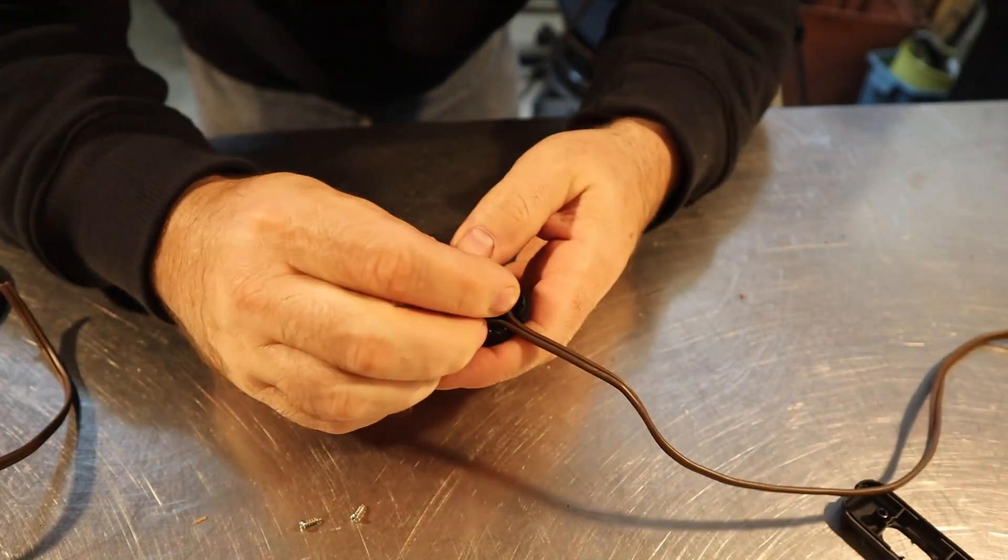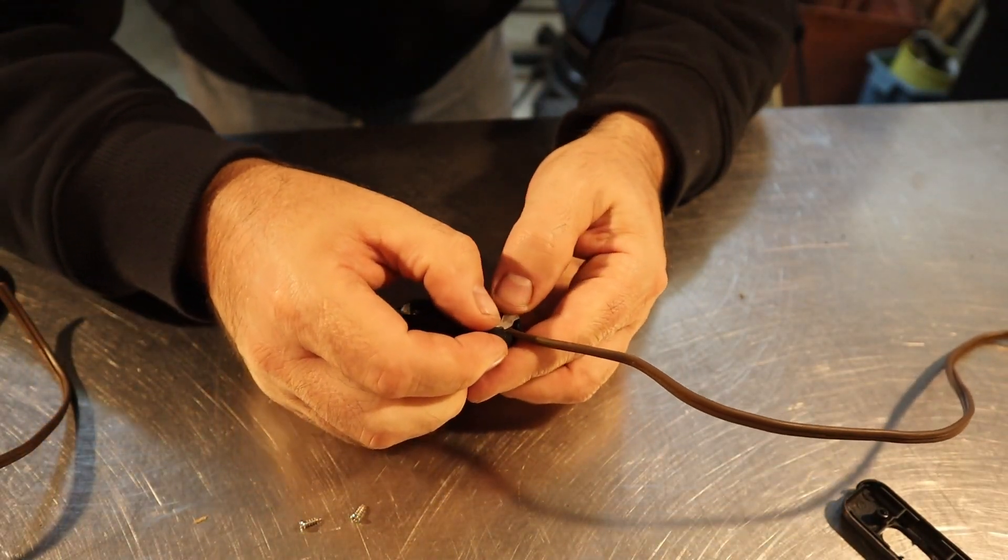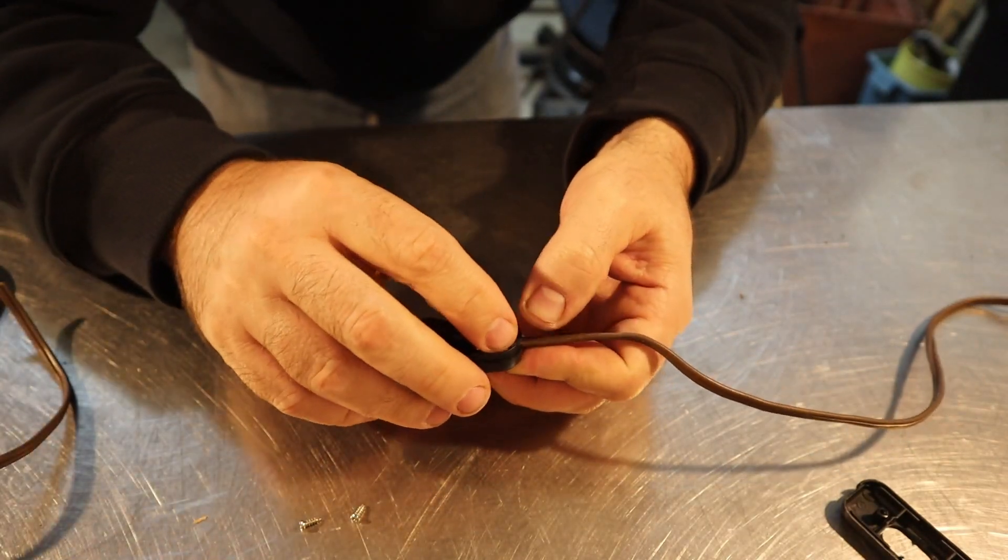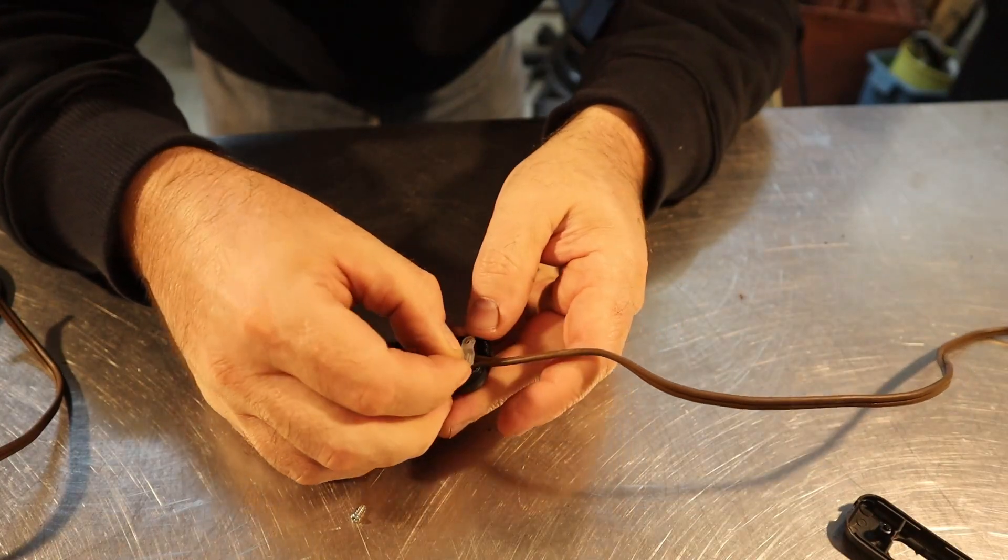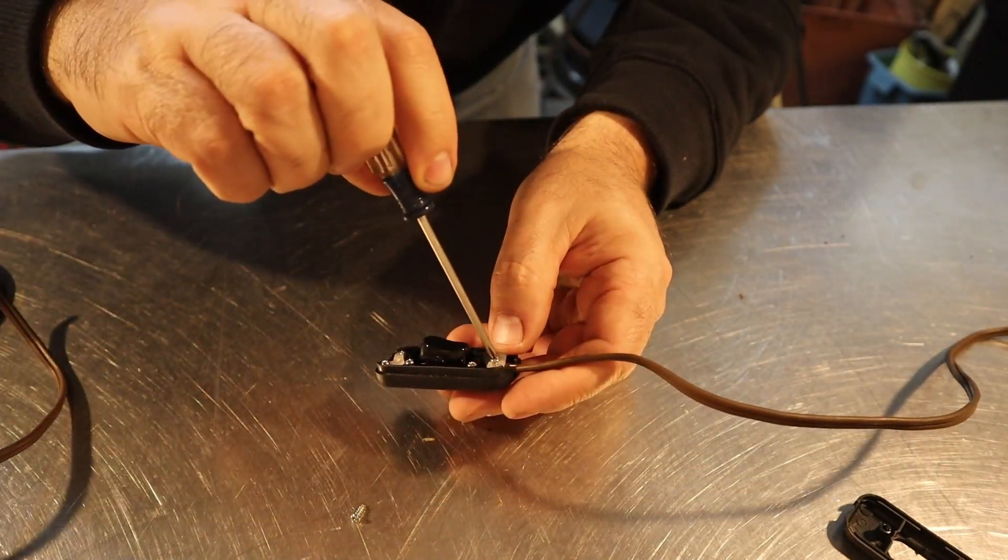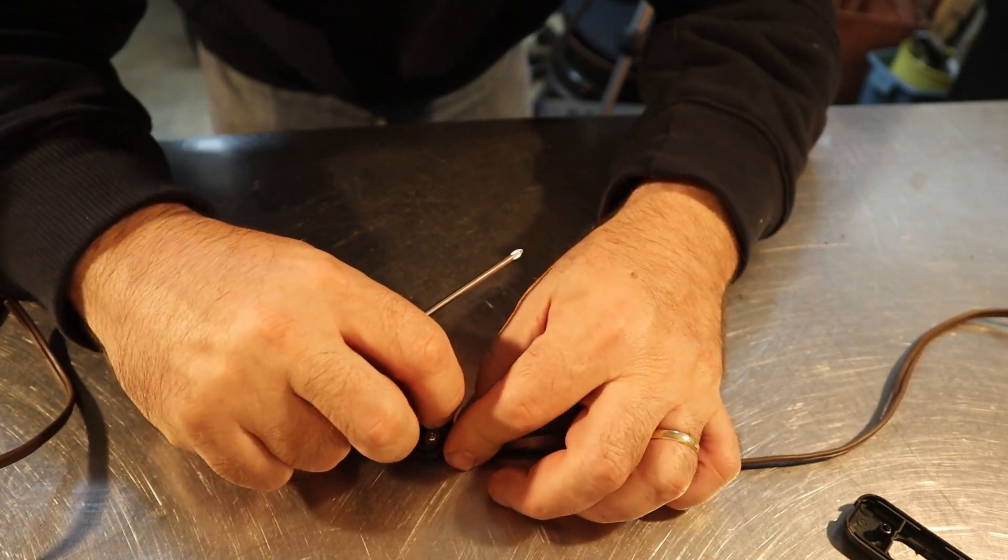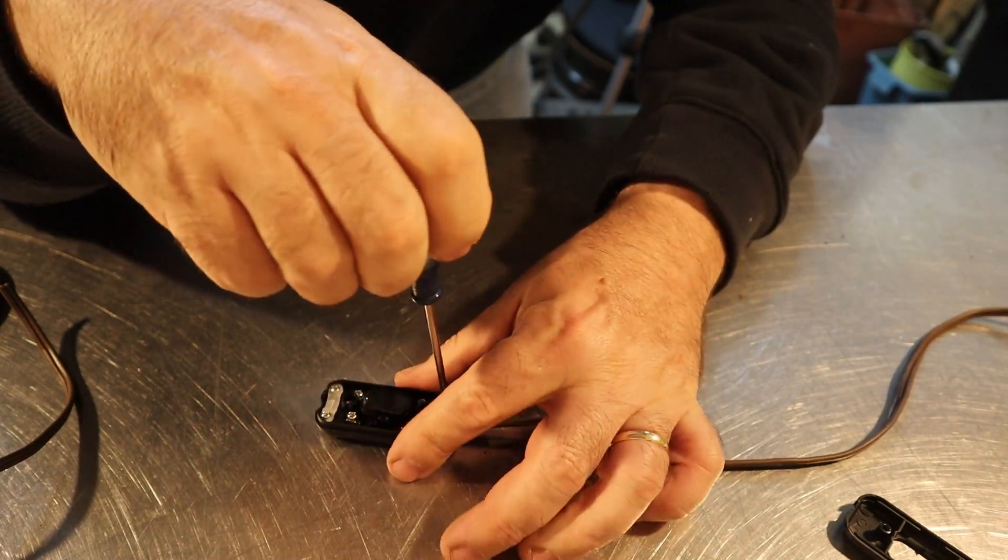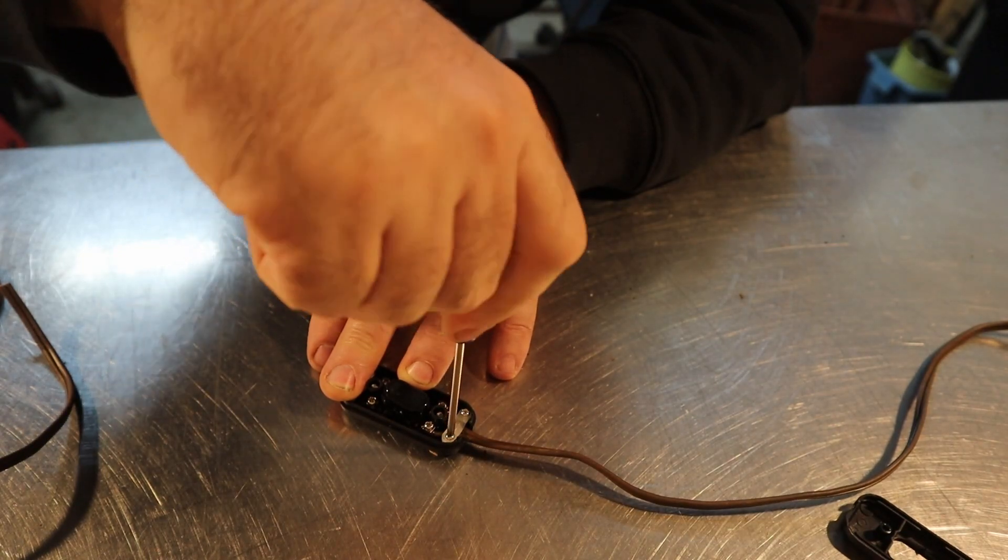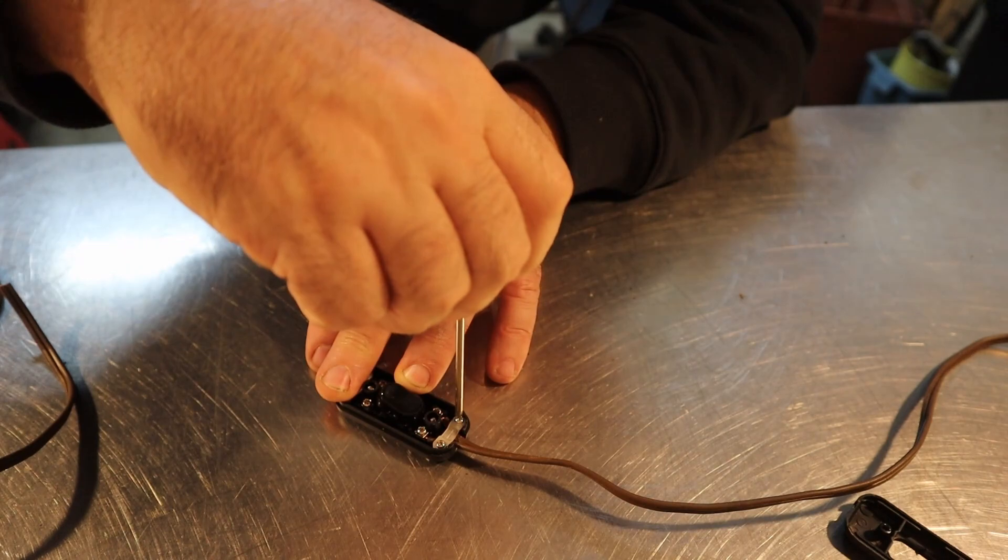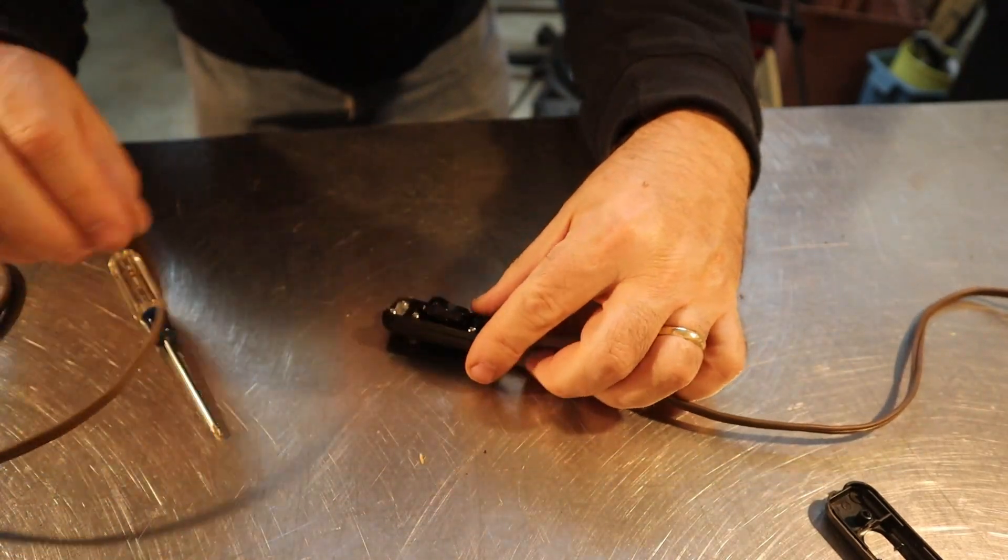Alright, now I'm going to put the strain relief on. This is going to put pressure on the wire so that if this gets tugged on, it won't pull on where the connections are. Alright, I got that one started, let's get the other one started. So that should hold the wire pretty tight, and we're just going to do the same to the other side.